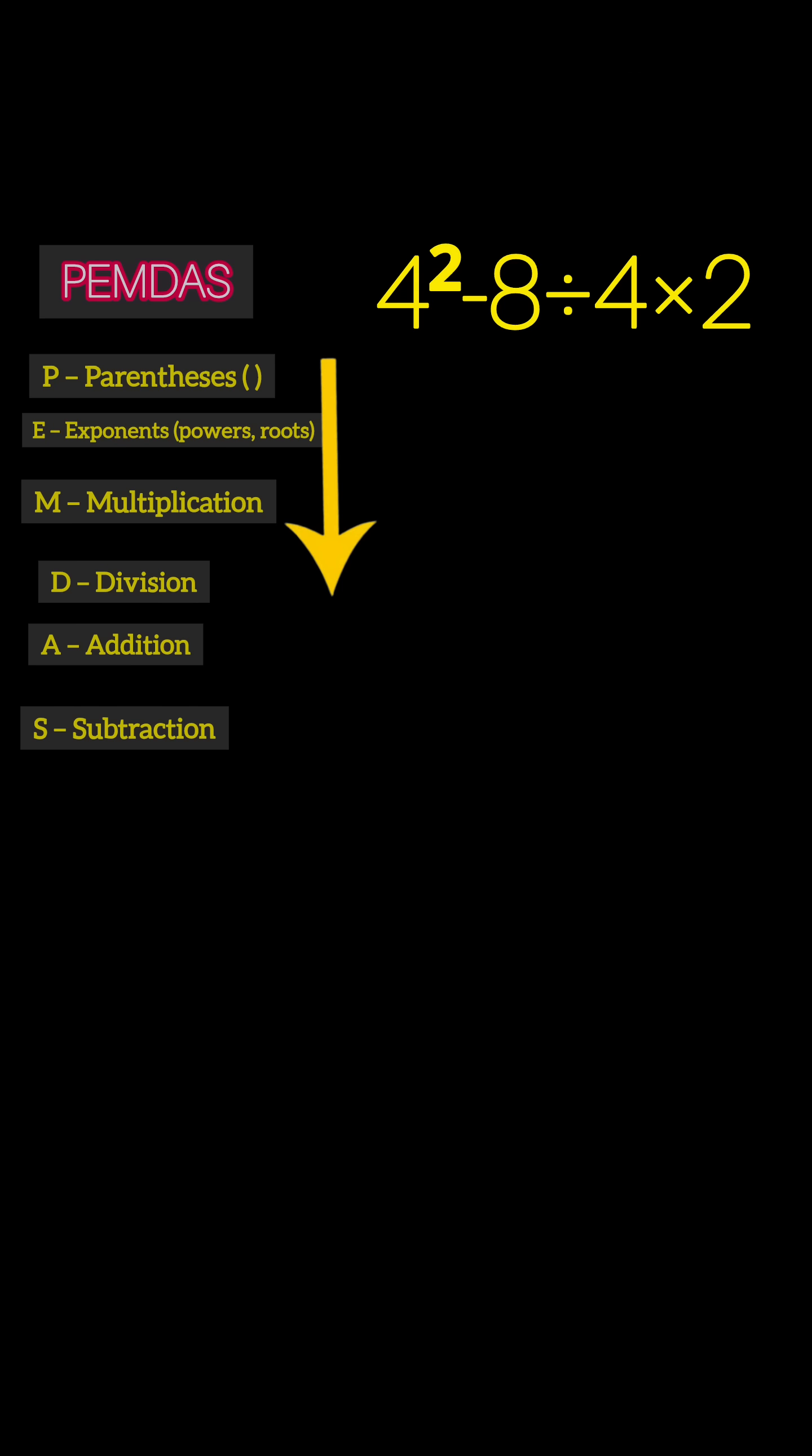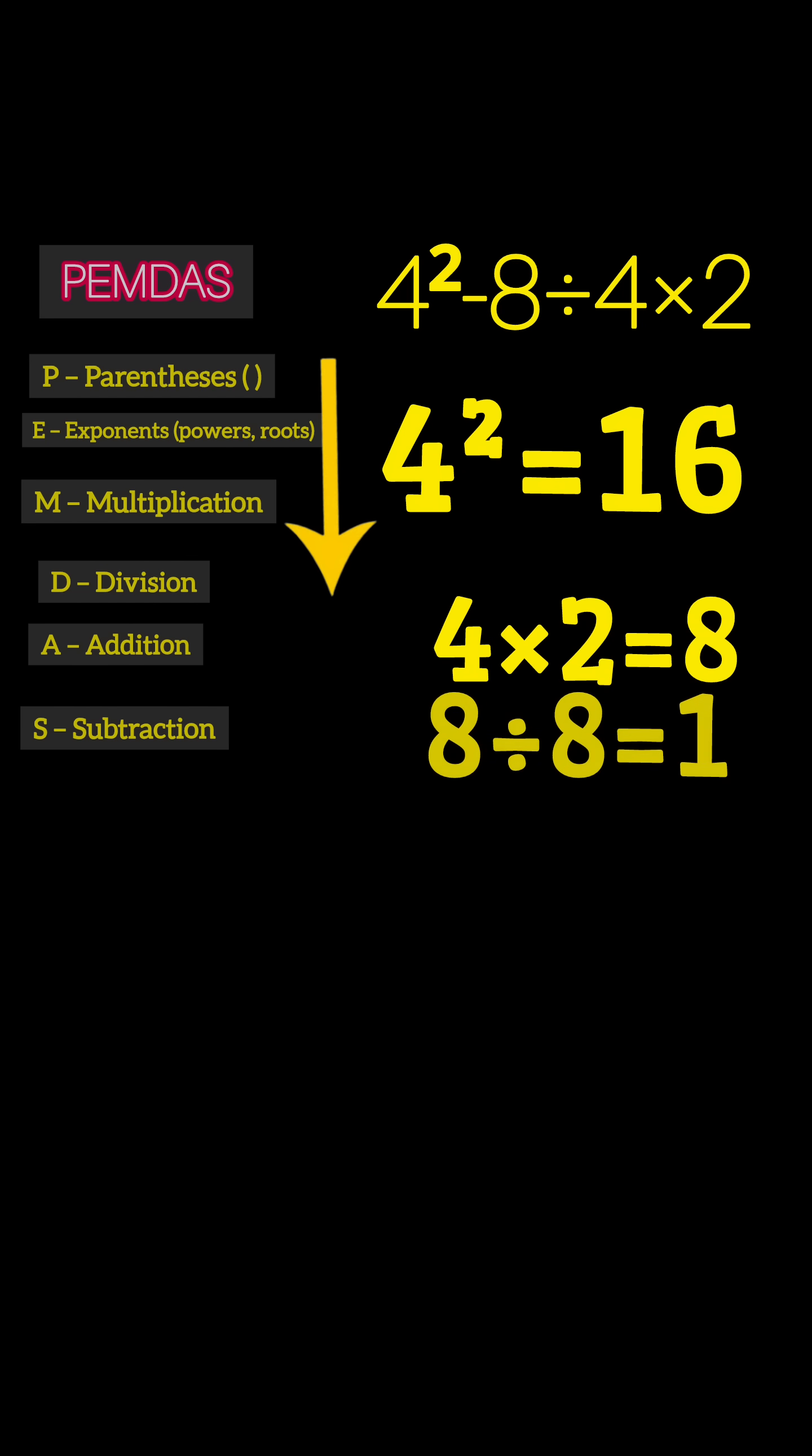They start with the exponents: 4² = 16. Then they go straight to multiplication: 4 × 2 = 8. Next they divide: 8 ÷ 8 = 1.